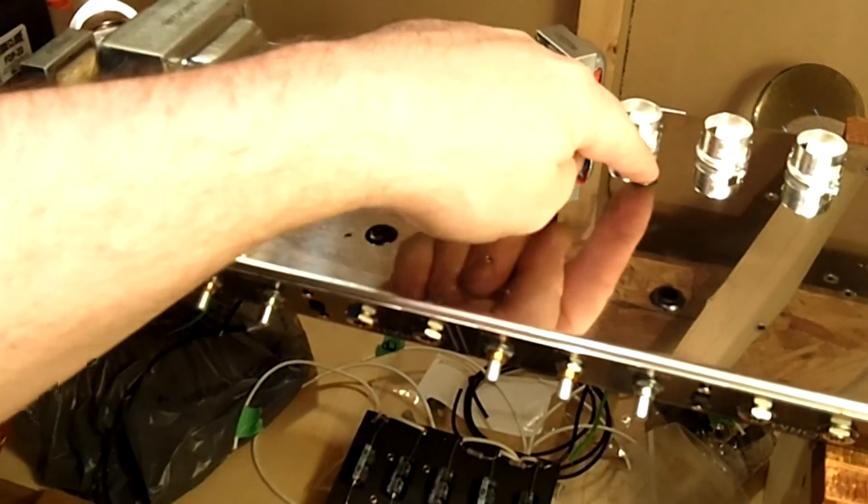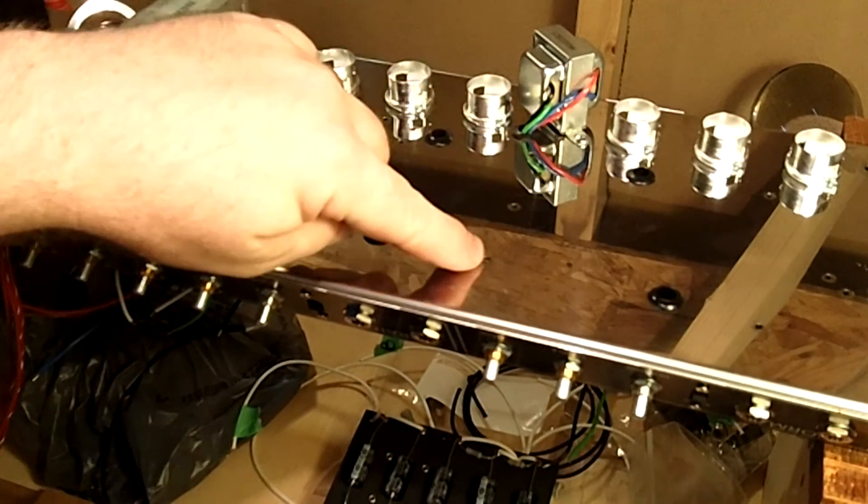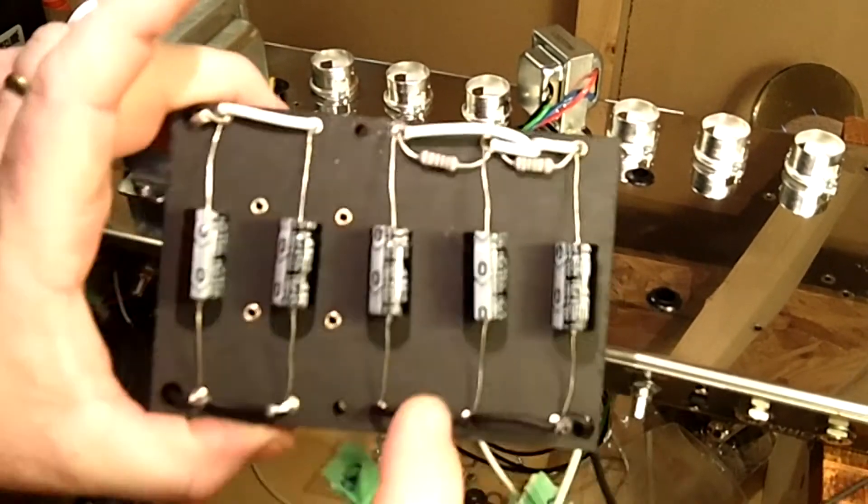And then you can see this just keeps these connections from shorting out against the chassis itself. And then we go back and you've got four grommet holes there and the two mounting holes.